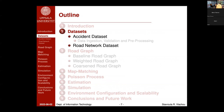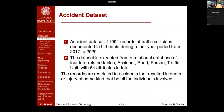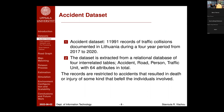The first dataset, which we'll call the accident dataset, consists of 11,991 records of traffic collisions documented in Lithuania during the four-year period between 2017 and 2020. This dataset was extracted from a relational database of four interrelated tables: accident, road, person, and traffic unit. The database consists of 62 attributes in total. It's worth noting that these records are restricted to accidents where some kind of harm or death occurred, as accidents with no harm are held in a different database for insurance purposes.